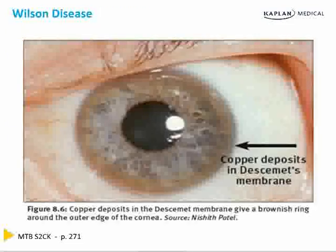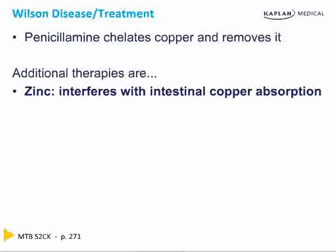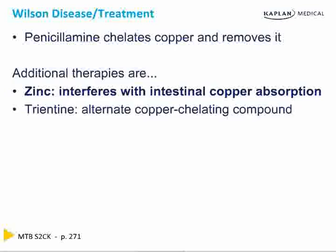Here's a classic example of a Kayser-Fleischer ring with copper deposition in Descemet's membrane. Penicillamine chelates copper and removes it from circulation. Additional therapies are zinc, which interferes with intestinal copper absorption, and trientine, which is an alternate copper chelating compound.